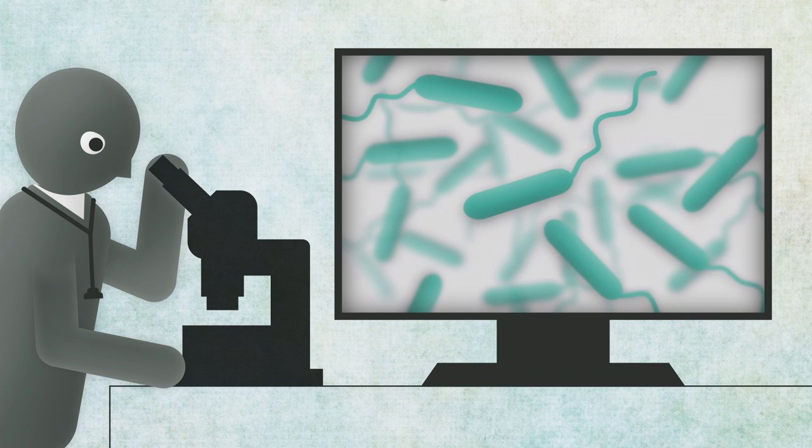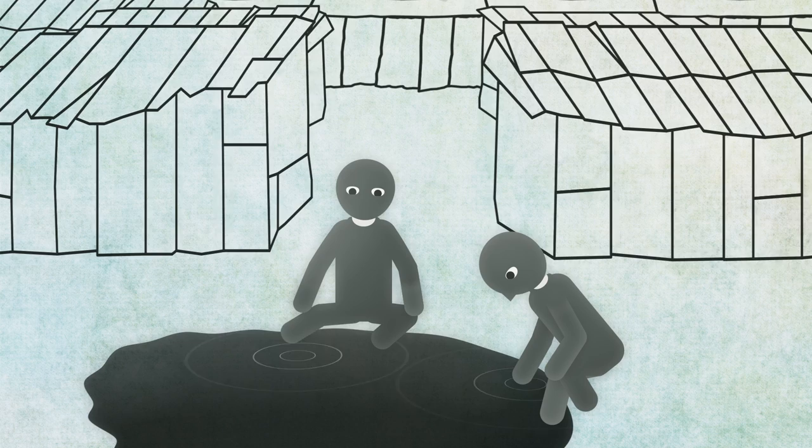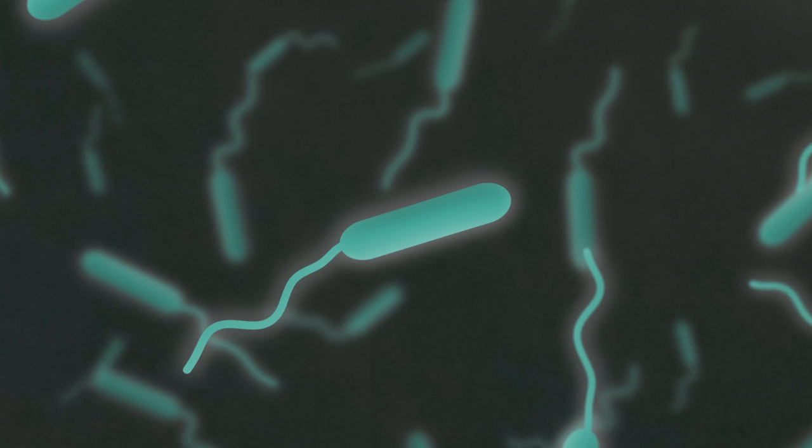Vibrio cholerae is a comma-shaped bacterium that causes cholera. Like most Vibrio bacteria, it is extremely mobile and moves and multiplies at great speed in water.